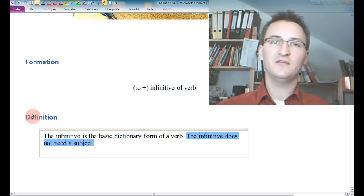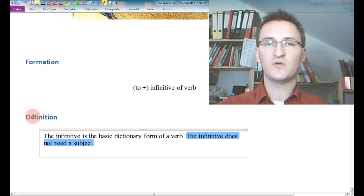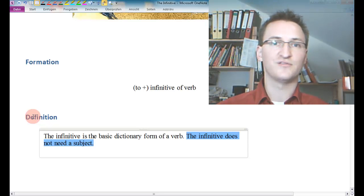Interestingly, the infinitive can exist without a subject in a sentence. We'll take a look at a few examples later on. But this is something that separates it from finite forms of the verb, such as verbs in the present tense or the progressive or whatever.